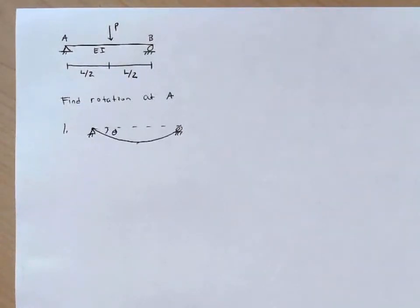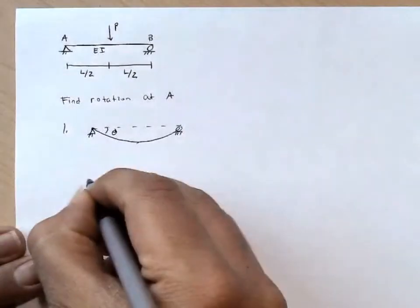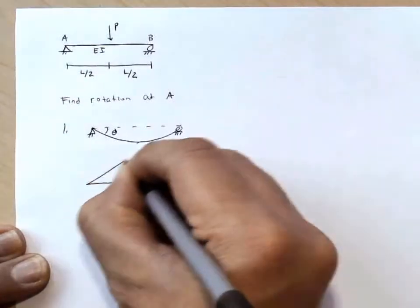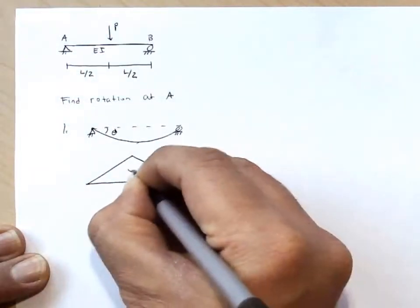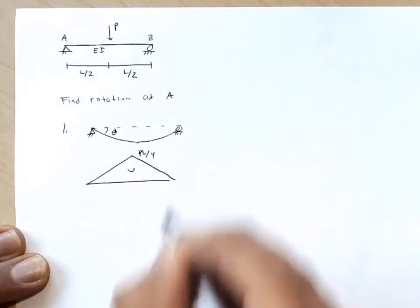Now what do we need to do in step one? We need to compute the moment diagram due to the real loading. Hopefully by now, this isn't too difficult. We could go through and compute the reactions at A and B and go through the whole process to find the shear diagram, to find the moment diagram.